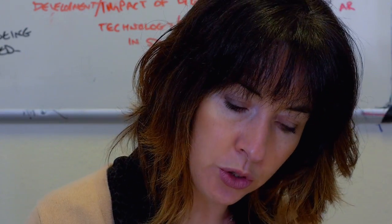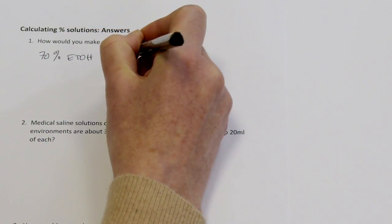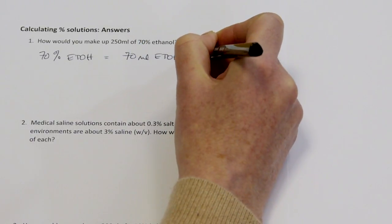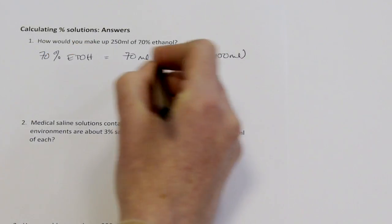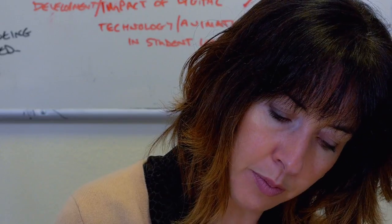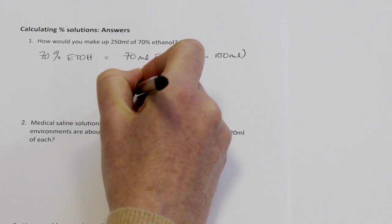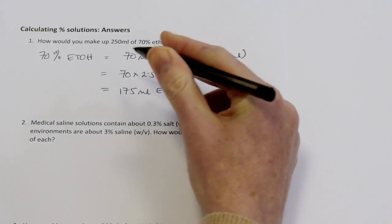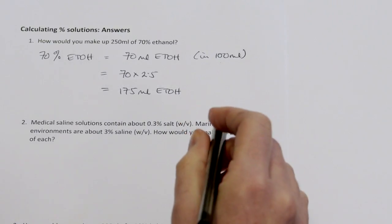The first question asks how would you make up 250 mils of 70% ethanol? 70% ethanol is 70 mils of ethanol in a final volume of 100 mils. I want 250 mils, so I need to scale this up by a factor of 2.5. So 70 times 2.5 equals 175 mils of ethanol made up to a final volume of 250 mils — meaning 250 minus 175 is 75 mils of water.